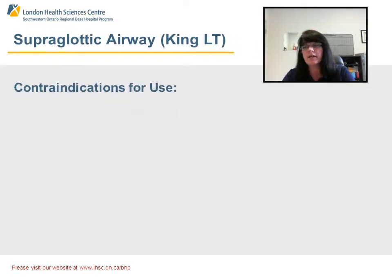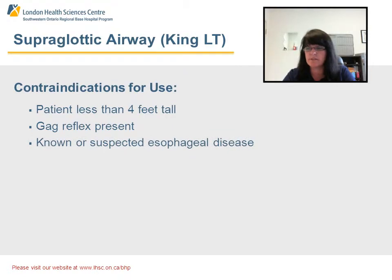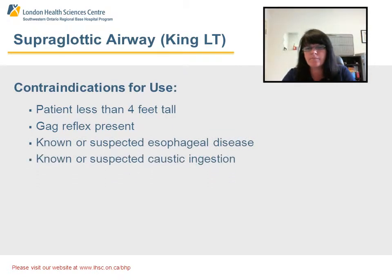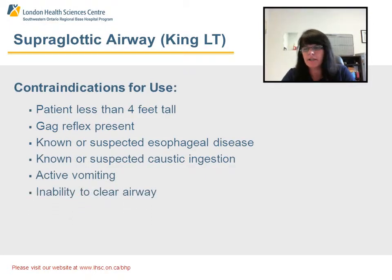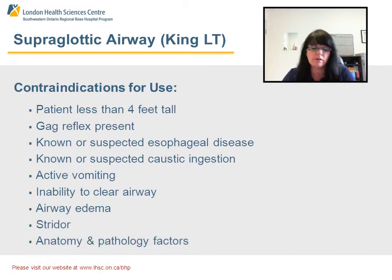Contraindications for using a KingLT: patient is less than 4 feet tall, gag reflex is present, known or suspected esophageal disease, known or suspected caustic ingestion, active vomiting, inability to clear an airway, airway edema, any stridor, or any anatomical or pathological factors that would inhibit using a KingLT.